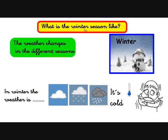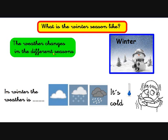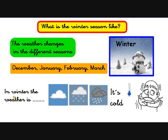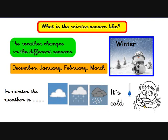So, what is the winter season like? We know that the weather changes in the different seasons. The first season of the year is winter. Do you know the months that form the winter season? They are a little bit of December, some days of December, the whole January, the whole February, and some days of March. So right now we are in winter. And in winter, the weather is cloudy, snowy, rainy, and cold.